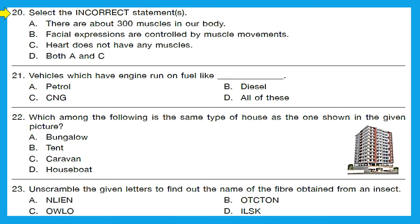Question 20: select the incorrect statement. Option A — there are about 300 muscles in our body — this is incorrect because there are about 600 muscles in our body. Option B — facial expressions are controlled by muscle movements — absolutely correct. Option C — the heart does not have any muscles — absolutely incorrect, because the heart is a muscular organ that beats continuously. Option D is both A and C, and our right answer is option D.